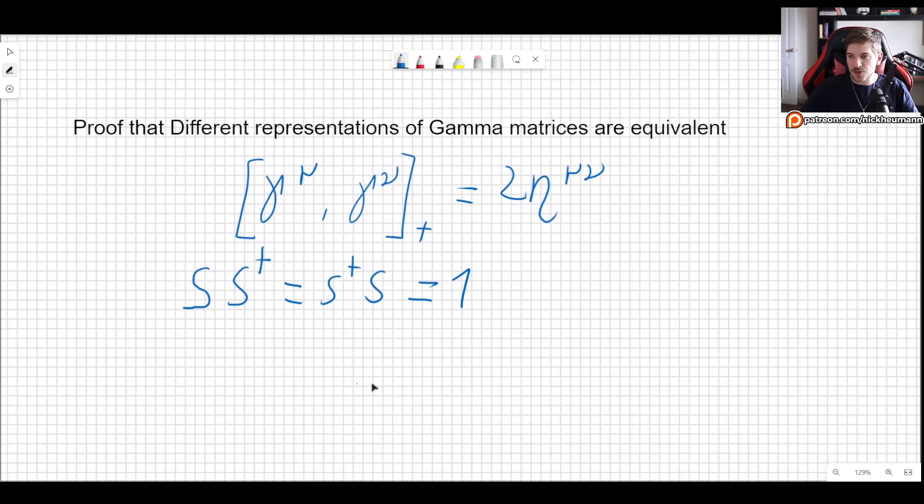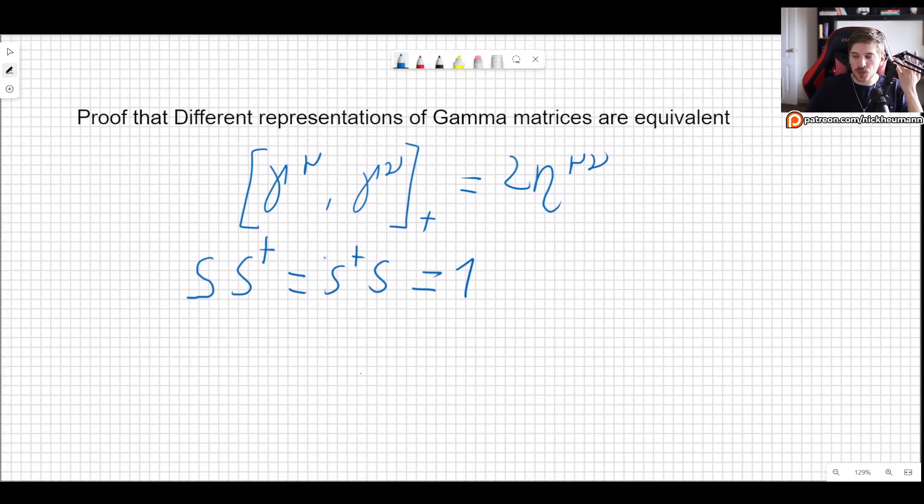So the thing that we will do is keep in mind that we have one representation where we have these gamma mu matrices, and then we have another one and we will call them gamma mu prime. And to go from this to the other, we are going to multiply by S and S dagger.